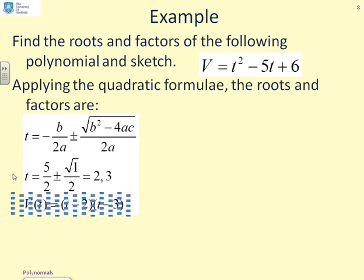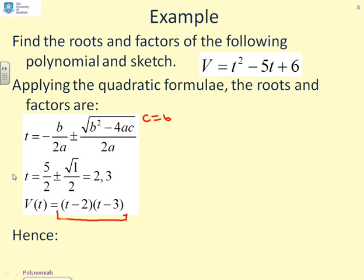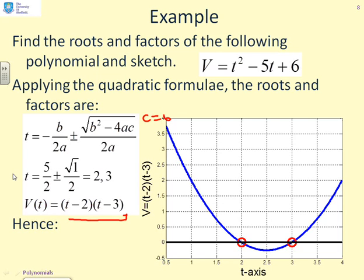And, therefore, we can rewrite the polynomial in terms of its two factors, t minus 2 times t minus 3. Again, I can sketch this just to confirm that everything is as I expected. And, again, you can see there's a root at 2 and there's a root at 3.